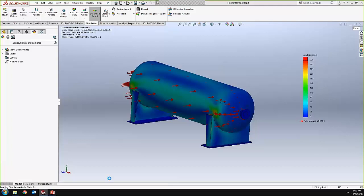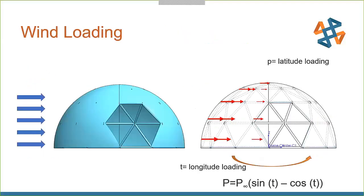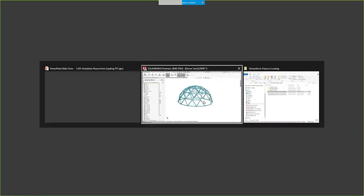Now let's take a look at spherical coordinates. We have the radius of the sphere plus longitudinal and latitude angles. I'm setting up the same 90 mile-per-hour load going over a dome. As the wind wraps around the dome — still assuming laminar flow — the pressure is zero at the top and zero on the sides. The equation uses both the P angle and the T angle: sine of P times negative cosine of T, giving us the directional loading that varies over two directions simultaneously.